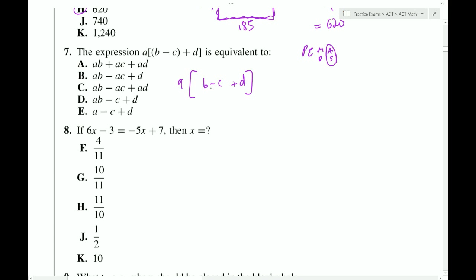So now we have B minus C plus D and A outside. Now this A has to be distributed in to all three pieces. So we have AB minus AC plus AD. And that looks like choice C.